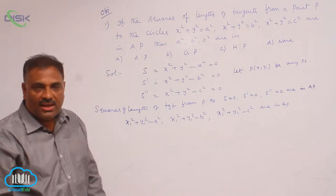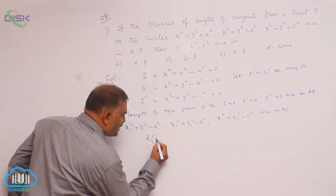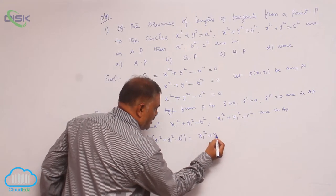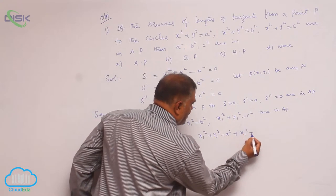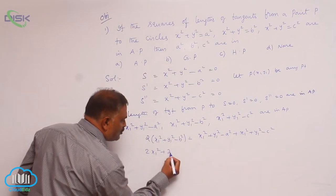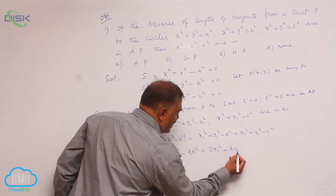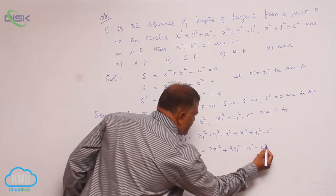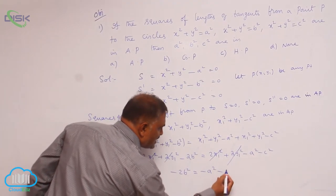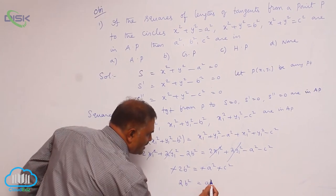When three terms are in AP, twice the middle term equals the sum of the first and last terms. So 2(x₁² + y₁² − b²) = (x₁² + y₁² − a²) + (x₁² + y₁² − c²), giving 2x₁² + 2y₁² − 2b² = 2x₁² + 2y₁² − a² − c². Cancelling common terms, we get 2b² = a² + c².